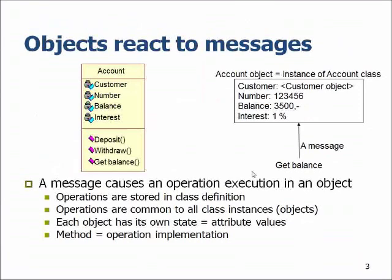Similarly, the objects we have in our program or system react to messages. A message means that it's a call for action — it causes an object to do something. For example, this object here could get a message that it needs to deposit money or make changes to the balance variable, withdraw, or get balance — just return the amount of that variable. Each object reacts to messages, and these messages are the arrows and other notations which you will see in the UML diagrams going from one object to another.